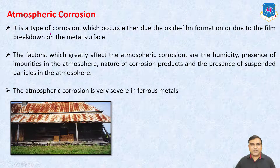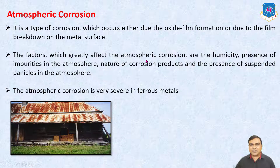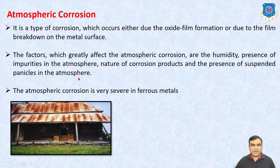Atmospheric Corrosion is a type of corrosion which occurs either due to oxide film formation or due to the film breakdown on the metal surface. The factors which greatly affect atmospheric corrosion are humidity, presence of impurities in the atmosphere, nature of corrosion products, and the presence of suspended particles in the atmosphere. Atmospheric corrosion is very severe in ferrous metals.